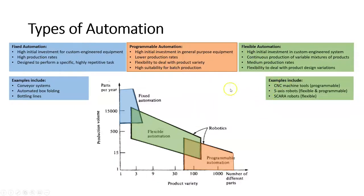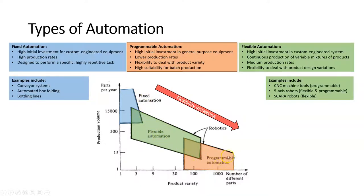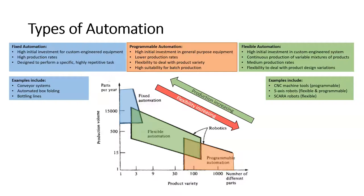Examples of flexible and soft automation include CNC machine tools, five-axis robots, and SCARA robots. Flexibility increases as we move from fixed through flexible and into programmable automation — programmable automation is the most flexible type. Likewise, production volume increases as we move from programmable through to fixed automation, because fixed automation is simpler, can move faster, is custom designed, and typically doesn't require programming.